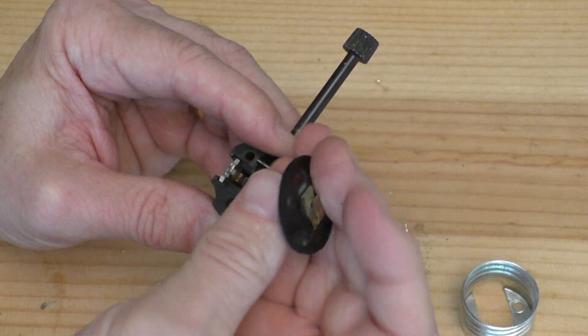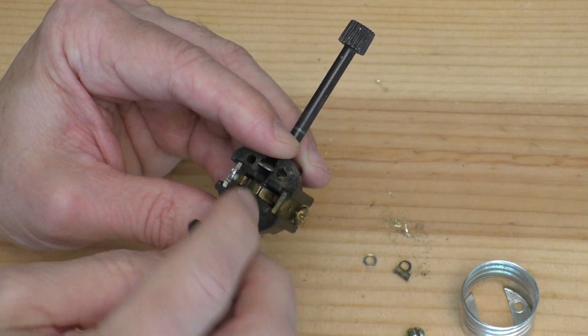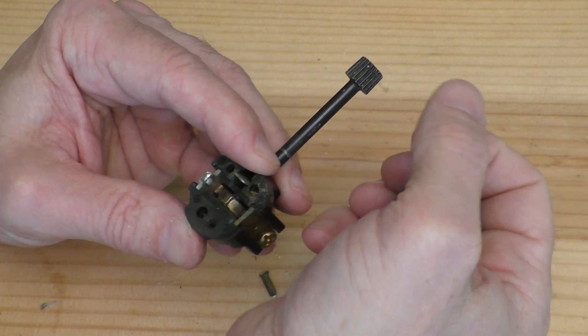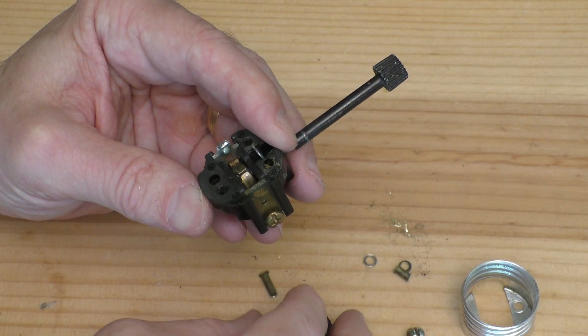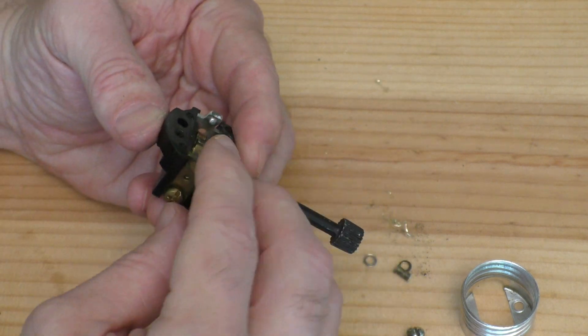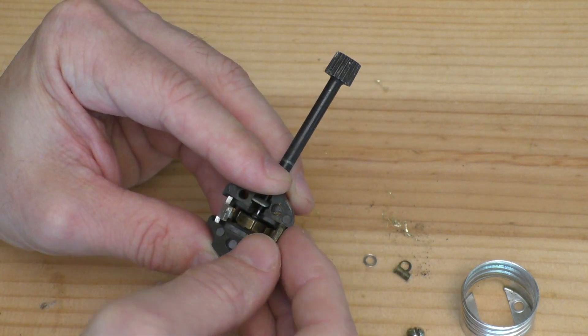So as this spins, this contact here and this contact are hitting the wheel at two different locations. So let's put that aside for now. We could move this up and you can see...